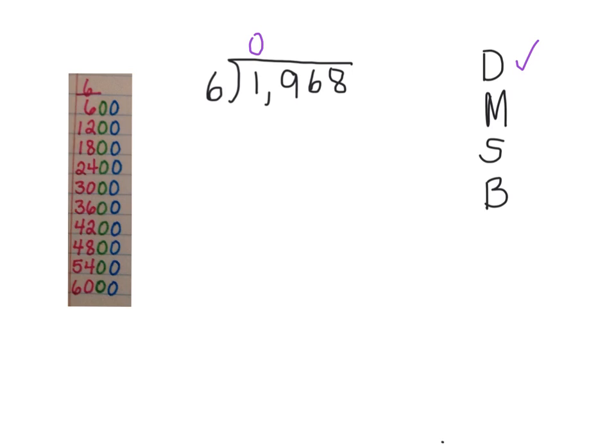So I divide it, then I multiply. Zero times six is zero. Then I subtract, and then I bring down the nine. After I bring down I know I'm ready to start over again at the top of the acronym.